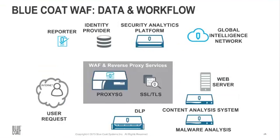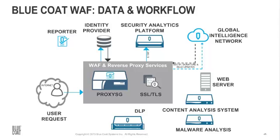Now we'll look at the actual data and workflow through the ProxySG to see how it integrates with the rest of the Bluecoat portfolio. First, a user requests a URL. Next, depending on policy, the ProxySG can check whether the user is authenticated and authorized to access the resource. The global intelligence network comes into play as the ProxySG checks the geolocation of the client via GeoIP database lookup. The ProxySG looks for attacks targeting the application running on the server using new advanced engines as well as signature-based engines. If traffic is SSL encrypted, the ProxySG can decrypt it and send a clear-text copy of the request to the Security Analytics Platform using the encrypted tap feature.